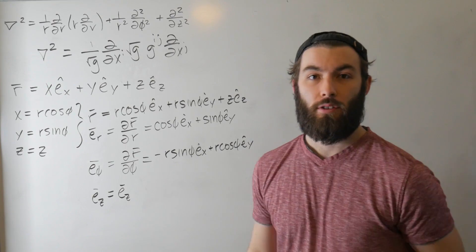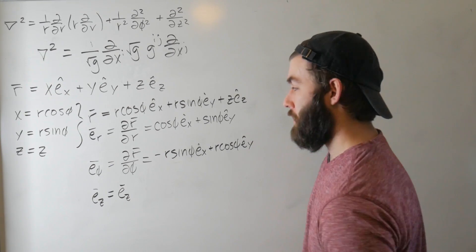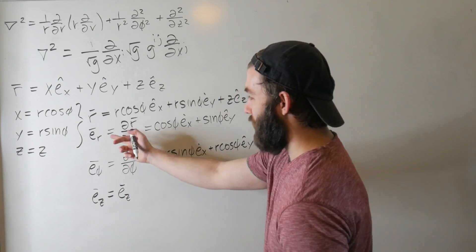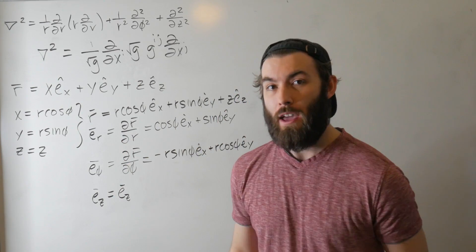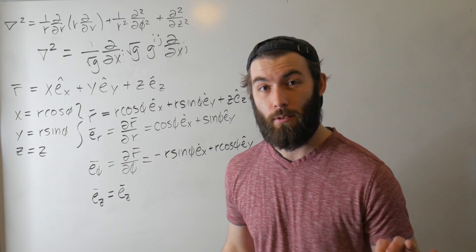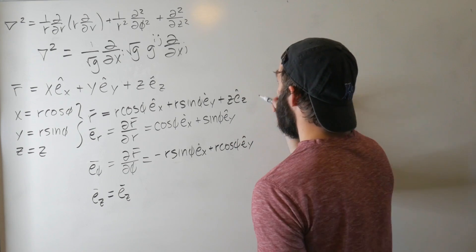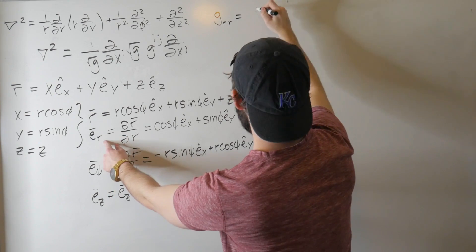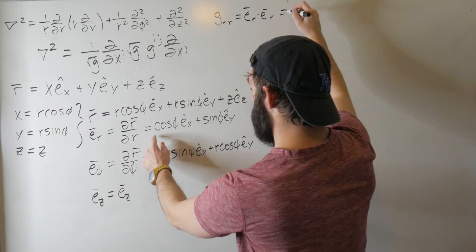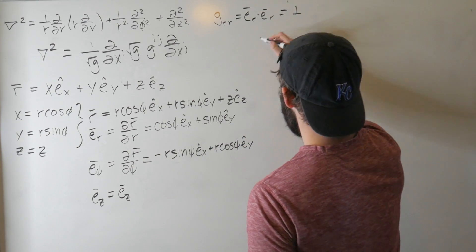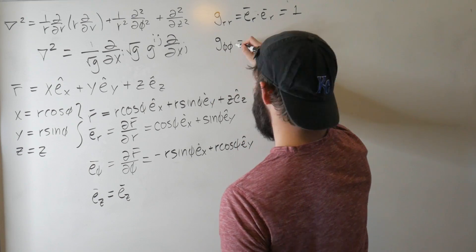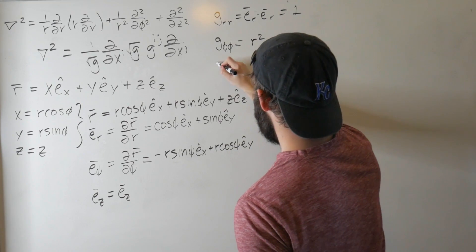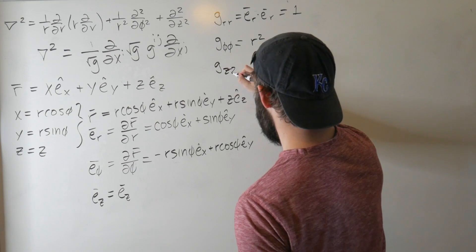The g_ij that we see here, first we have to calculate the downstairs metric tensor, the covariant metric tensor, and the way to do that is to just evaluate the dot products of these basis vectors. Now, the powerful part about this is that since we're working in an orthogonal system, all of the off-diagonal components of this dot product are just going to be zero, so we only have to evaluate the ones where i equals j. So g_rr equals e_r dot e_r, which is cosine squared plus sine squared, which is one. g_phi phi equals that's going to give us an r squared, and then sine squared plus cosine squared, so it's just r squared. And then g_zz is just going to give us one.